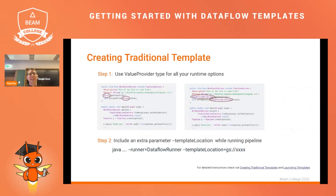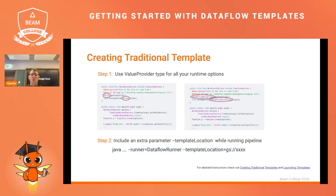Whenever you implement a traditional pipeline, you have to use the so-called ValueProvider class. For example, in a word count scenario where you have an input file — basically a string that refers to a file location — you have to use the ValueProvider class. And whenever you submit the pipeline, you have to add the template location so that Dataflow is able to locate the template and run it afterwards.